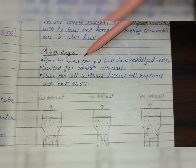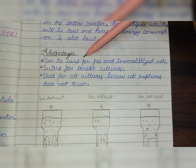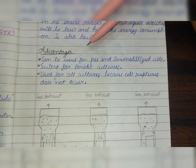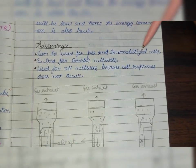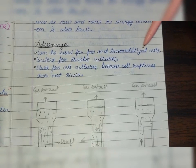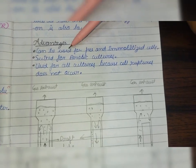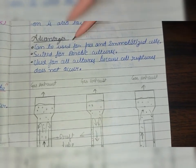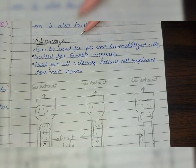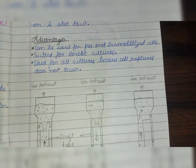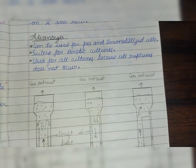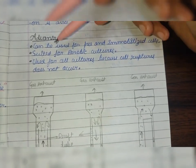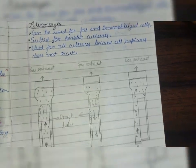What are the advantages of this type of bioreactor? Advantages are that it can be used for free and immobilized cells. It is suitable for aerobic cultures because air is used for cell cultures and it does not cause cell rupture.